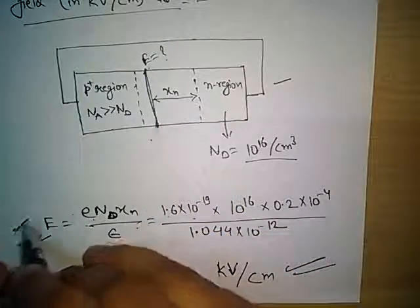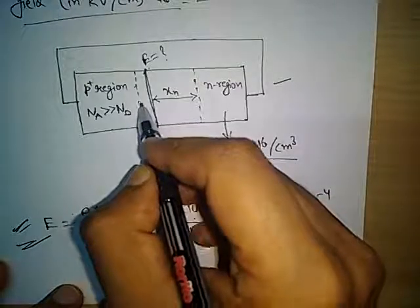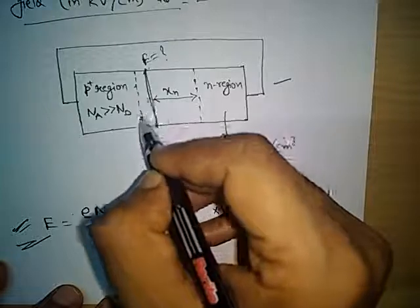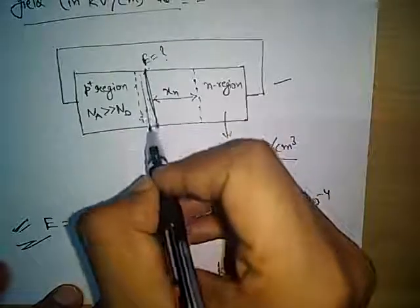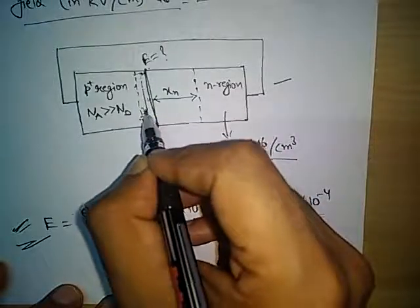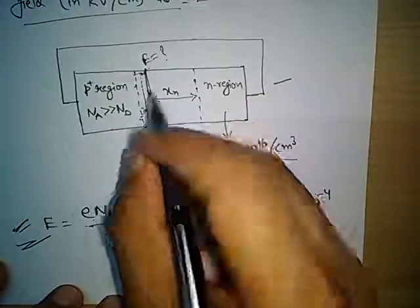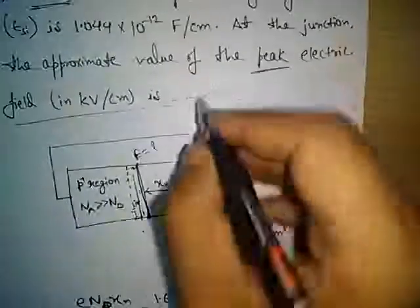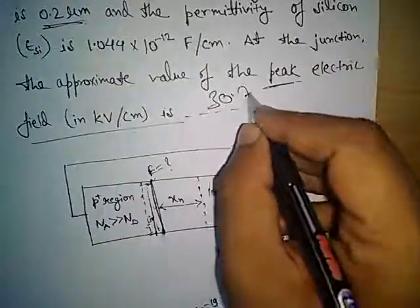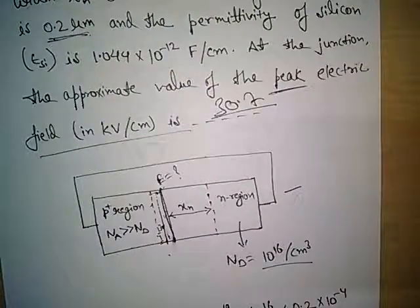This electric field is the maximum value — it is the peak value of the electric field. At any other point, if we calculate the electric field, the charge enclosed will be less, so the electric field will be less than this value. At the junction, the electric field is maximum, that is why the term 'peak electric field' is used. The answer is 30.7 kV/cm. This is all about the concept, and I will come with some other concept in the upcoming videos. Thank you so much for watching.